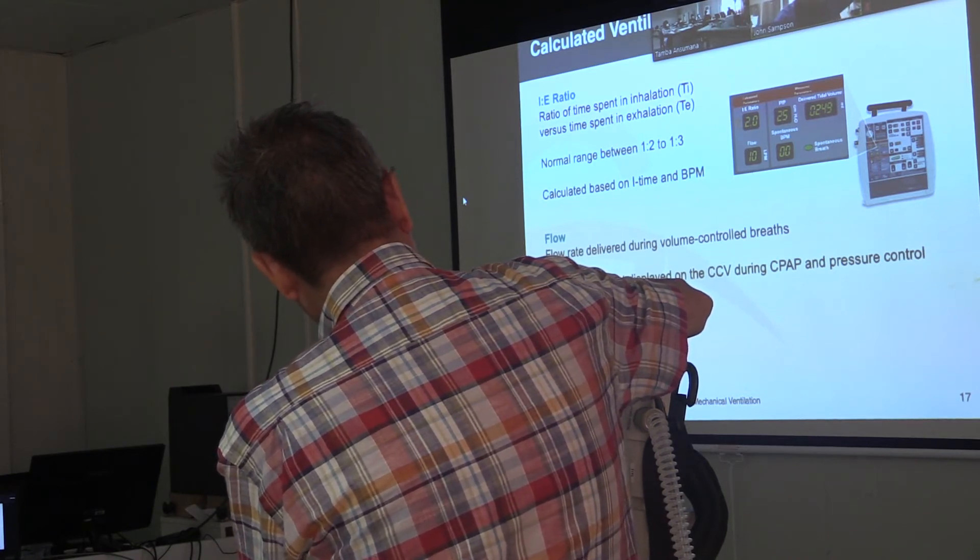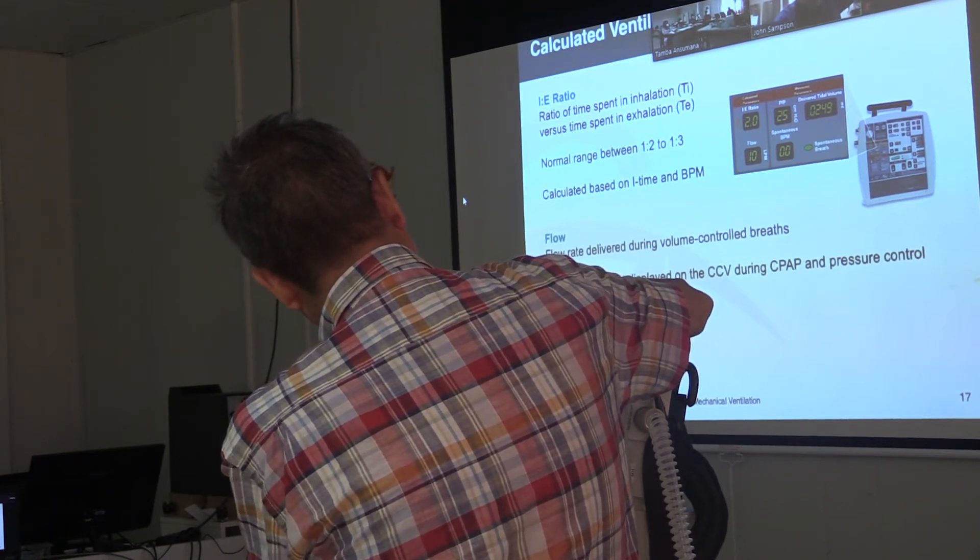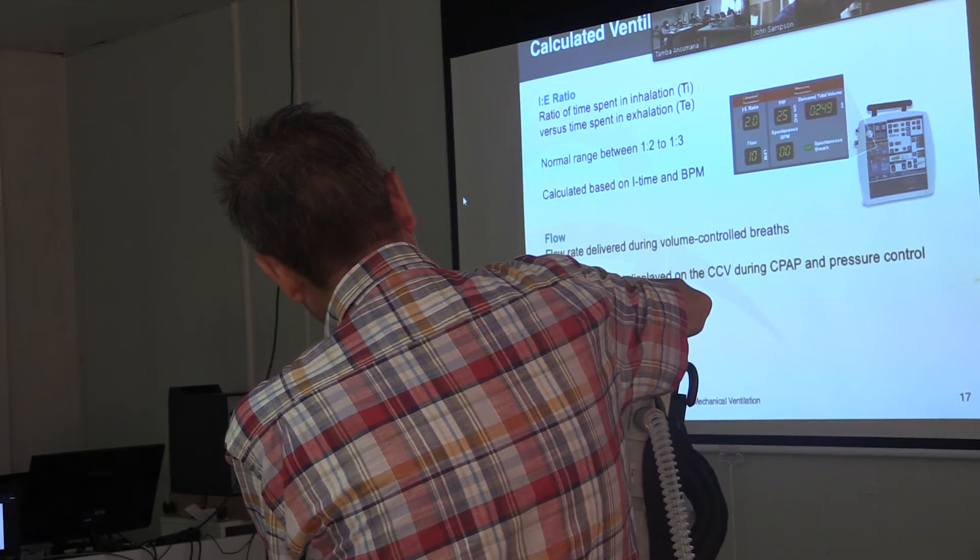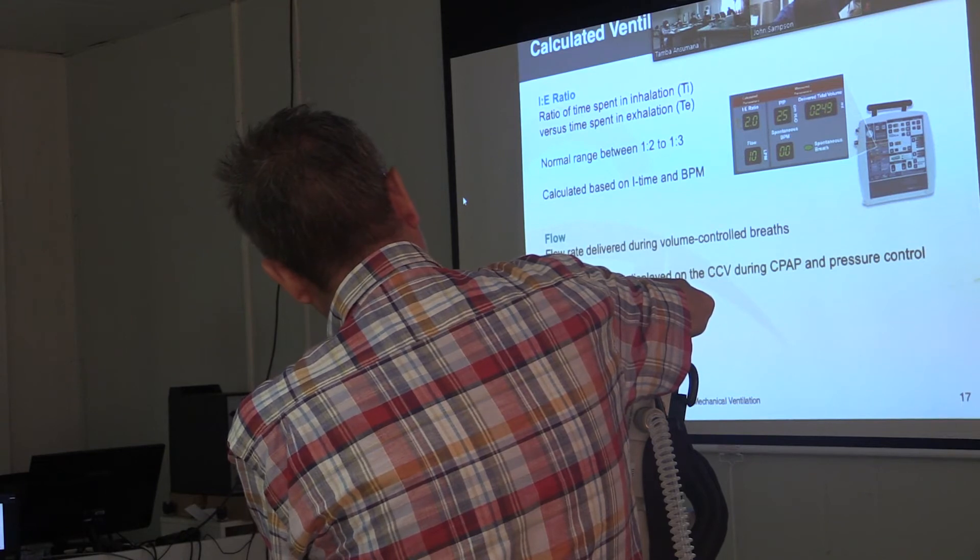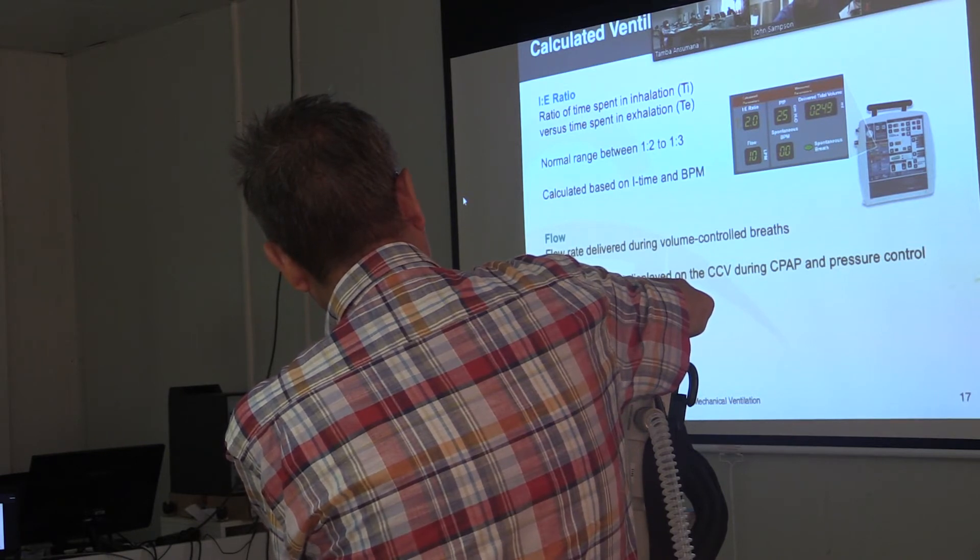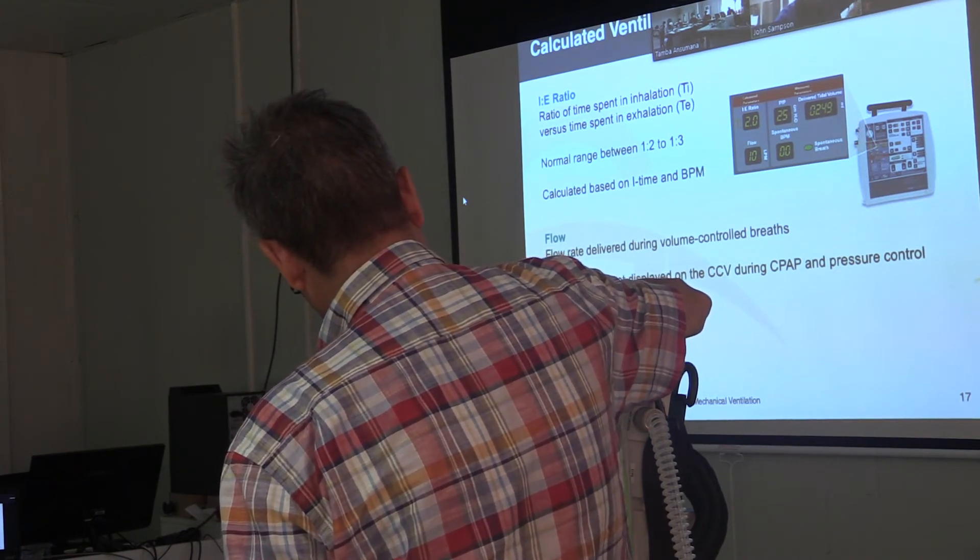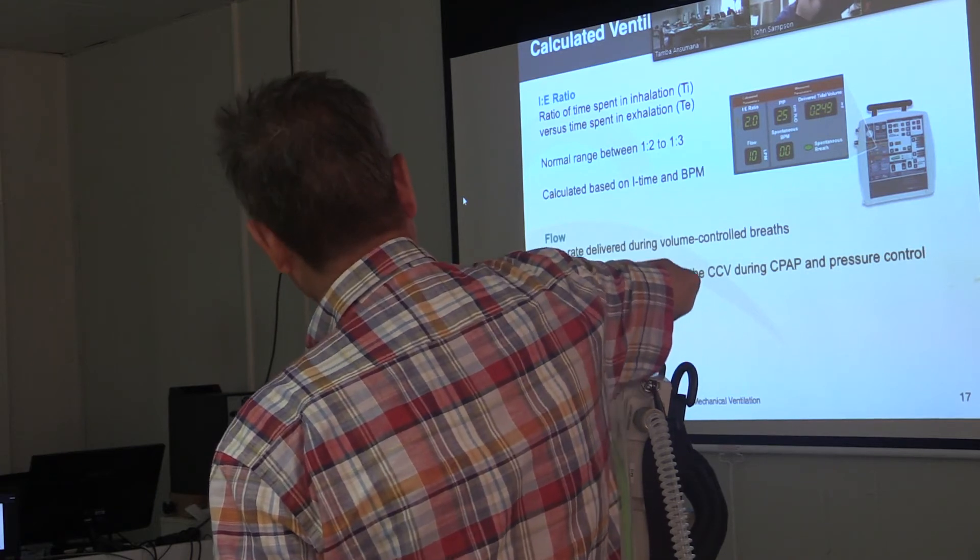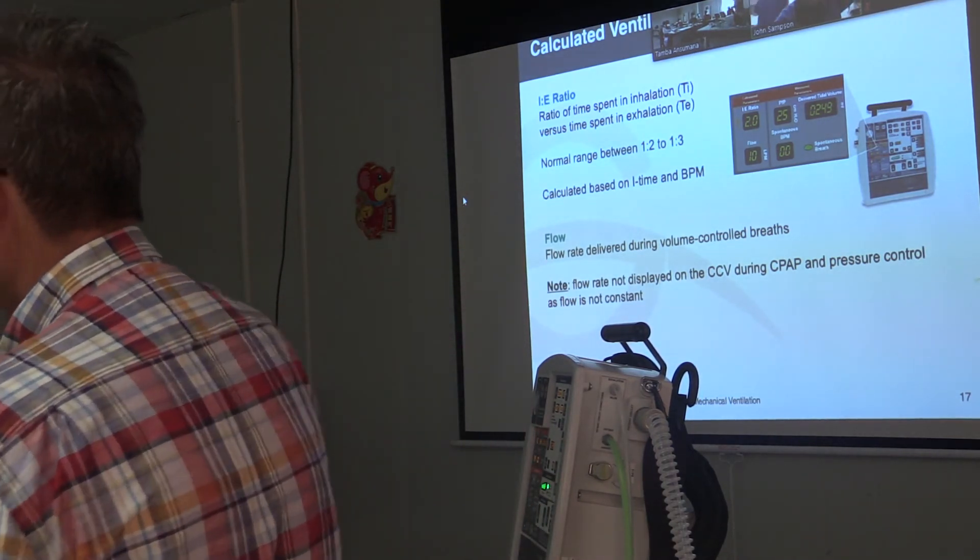It measures the spontaneous breaths per minute. Remember, you may set the breaths per minute for 10, but the patient might want to breathe 22. So that will show you the spontaneous breaths, and then it will light up every time they have a spontaneous breath. It's also showing you the flow, the liters per minute that's flowing through the ventilator. The flow can be very important, especially if you're using an oxygen concentrator or a flow meter to provide oxygen to this vent.